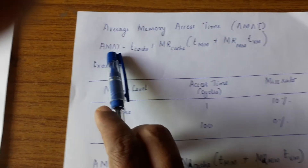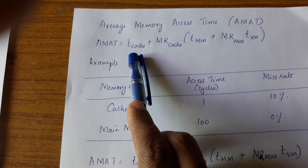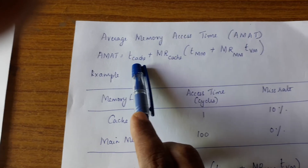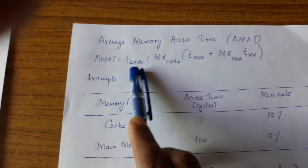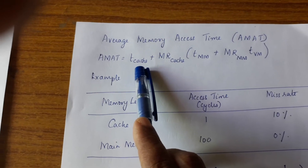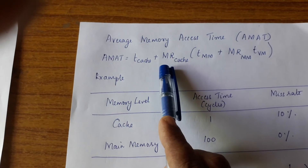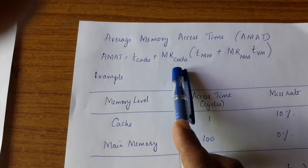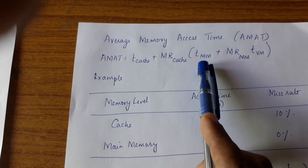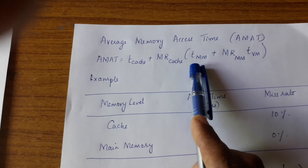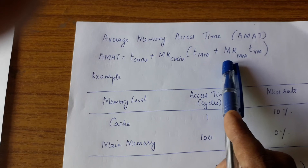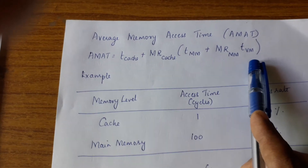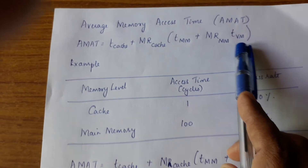Let us see once again: AMAT equals T_cache — the time taken to access the cache. If I did not find the data in the cache, then I multiply the miss rate of the cache (MR_cache) by the access time of the main memory. If I do not find it in the main memory also, then I multiply the miss rate of the main memory by the time taken to access the virtual memory.